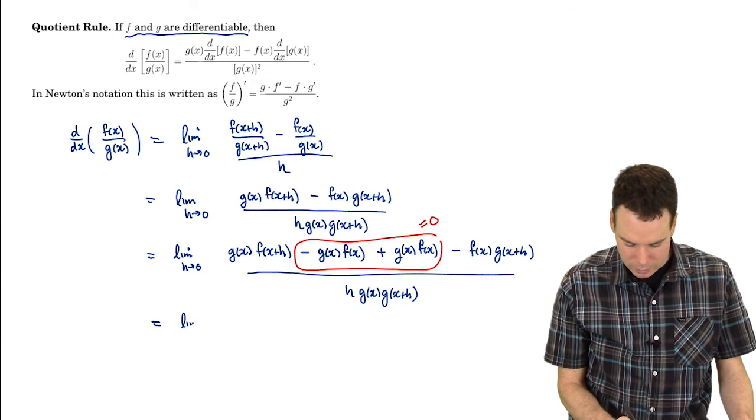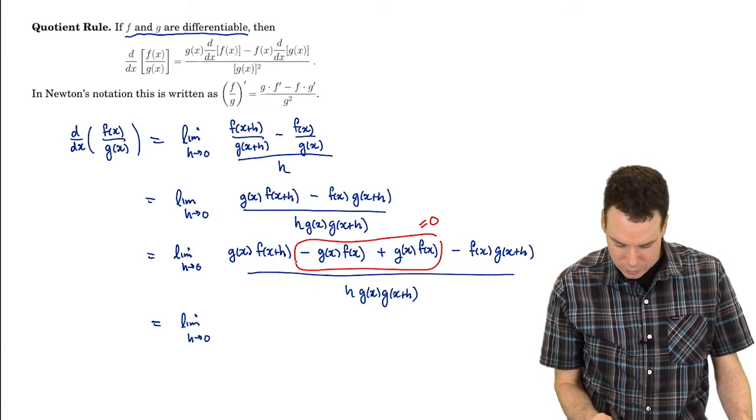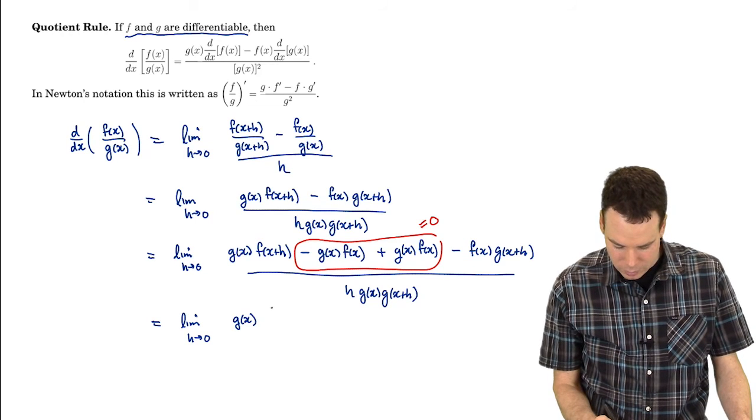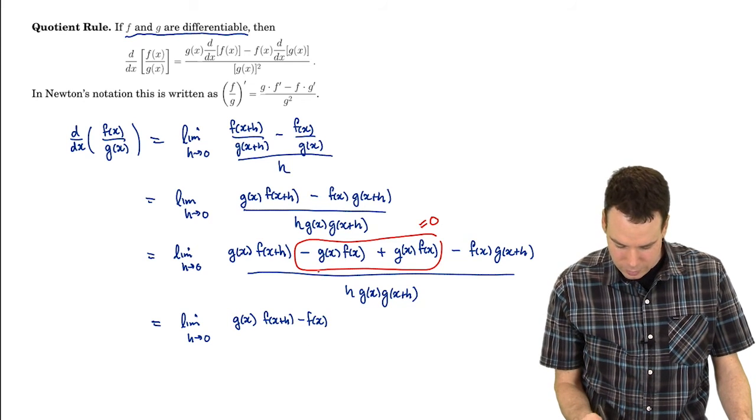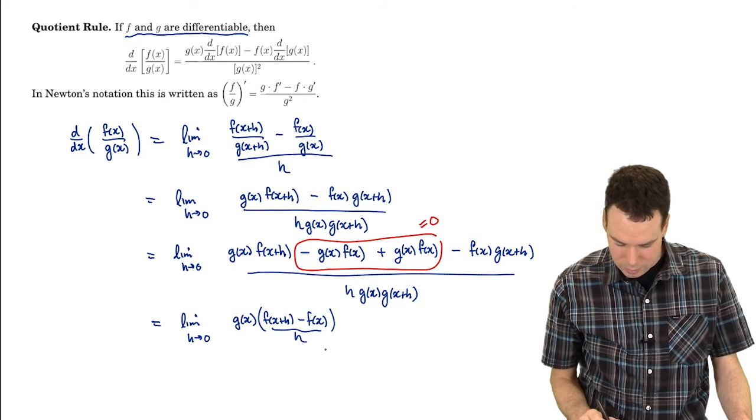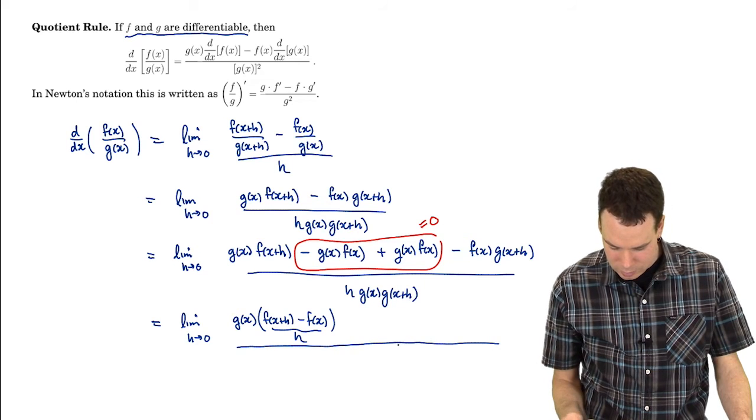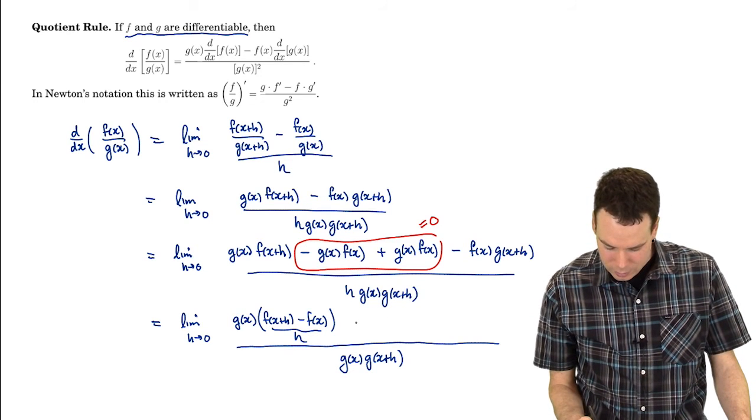So let's see about the rest. Limit as h goes to 0. So I'm going to split these things up. I've got a g of x in common with both of those first terms. So I pull that out. And I've got an f of x plus h minus f of x left over in those terms there. I've got an h on the bottom. I'm going to stick that under that. And I've got this g of x and g of x plus h. That's actually underneath everything.